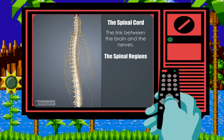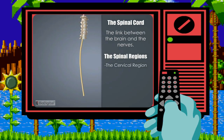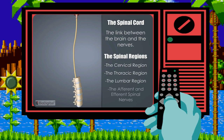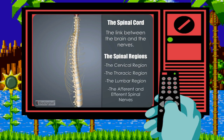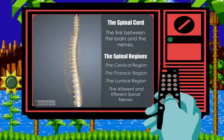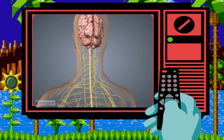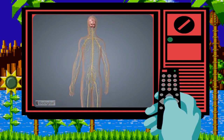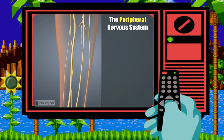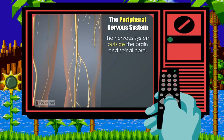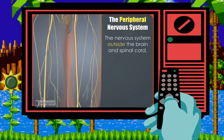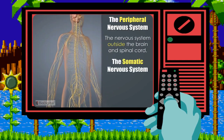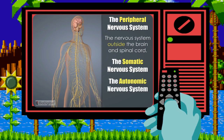The spinal cord is divided into four different regions: the cervical, thoracic, lumbar, and afferent and efferent spinal nerves, which merge to form the peripheral nerves. The peripheral nervous system is essentially the nervous system outside of the brain and spinal cord, and is subdivided into the somatic nervous system and the autonomic nervous system.